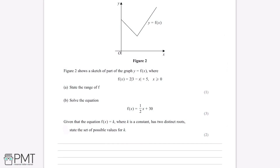Figure 2 shows a sketch of part of the graph y equals f of x, where f of x is equal to 2 modulus of 3 minus x plus 5, where x is greater than or equal to 0. Part a is asking us to state the range of f, and what the range of any graph means is all the possible values that y, the y-coordinate of all the points on the graph, can take.